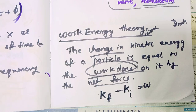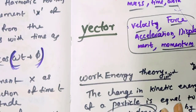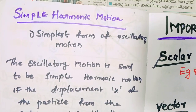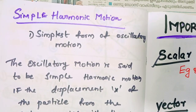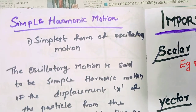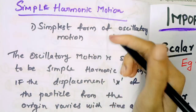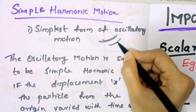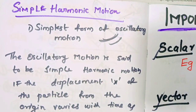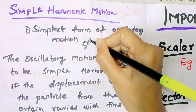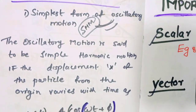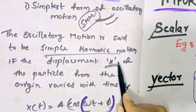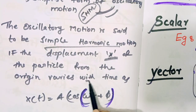Now we will talk about simple harmonic motion. Oscillation in this chapter is simple harmonic motion. Simple harmonic motion is the simplest form of oscillatory motion. The oscillatory motion is said to be simple harmonic if the displacement x of the particle from the origin varies with time.